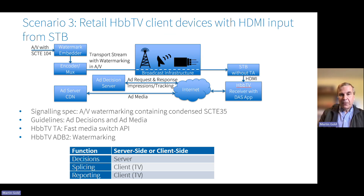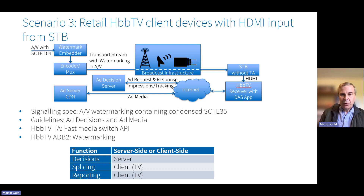The third scenario utilises the third type of signalling for targeted advertising specified by DVB. In this case, there is an HbbTV smart TV, but it is not receiving the service directly — instead it receives via an HDMI input connected to the output of a set-top box that is not itself capable of targeted advertising. The signalling is conveyed by audio and video watermarking, with the HbbTV smart TV supporting watermarking solutions specified by ATSC. The same DVB and HbbTV specifications are used as in the previous HbbTV scenario, with the addition of the Phase 2 version of the HbbTV specification for application discovery over broadband, or ADB2.